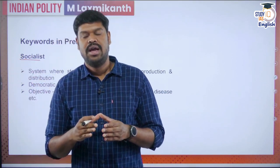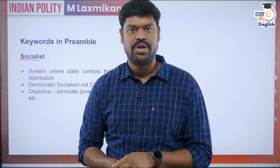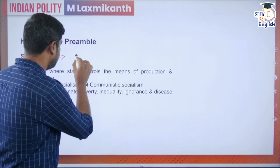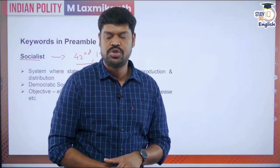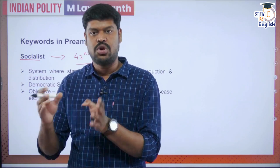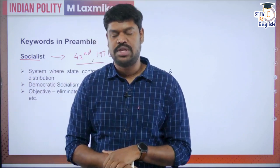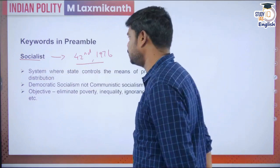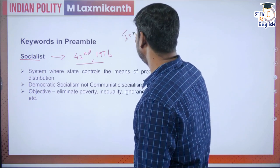The preamble also says that India is a socialist state. The word 'socialist' was not part of the original constitution. The word socialist was inserted into the constitution by the 42nd Constitutional Amendment Act 1976. Before that, the preamble only said 'Sovereign Democratic Republic' — only these three words were there. The 42nd Constitutional Amendment Act also inserted the word 'secular,' which will be discussed subsequently.